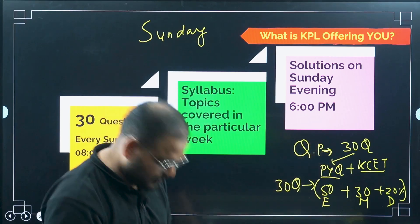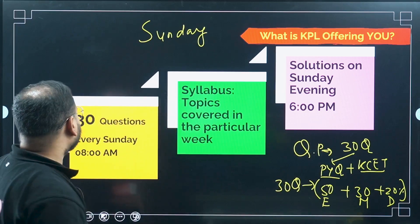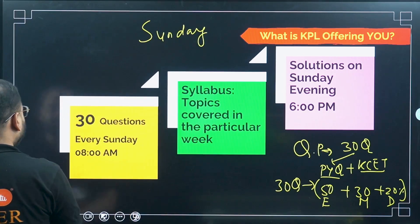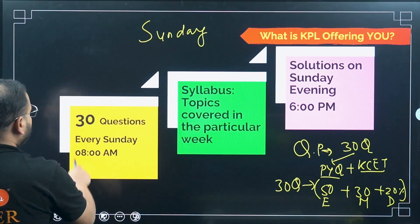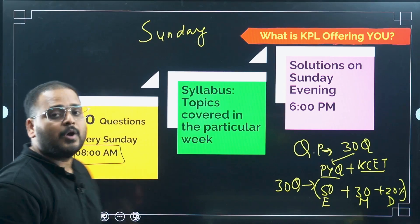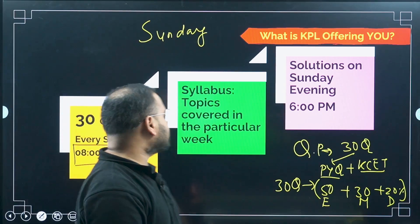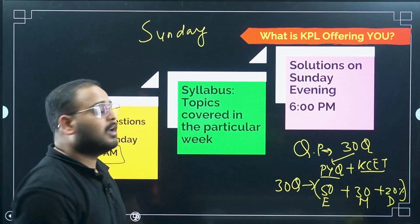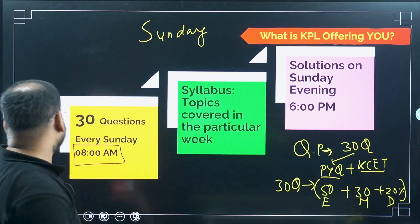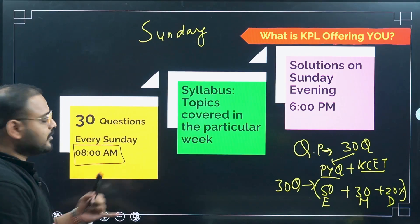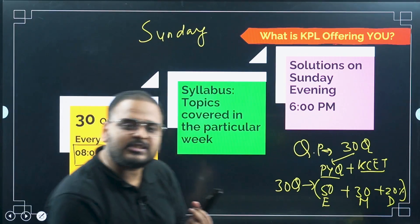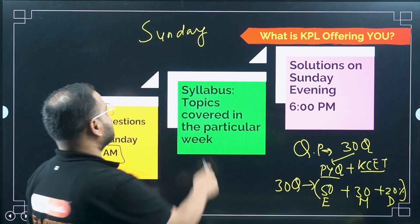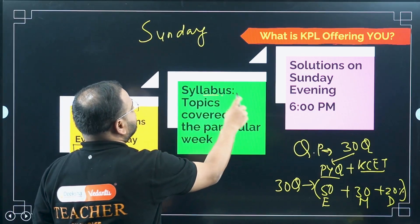Now, when will you get this question paper? You will get it in the morning of Sunday at 8AM. So the question paper will be available Sunday morning at 8AM. Now, what is the syllabus? The structure of the question paper is the first point, the timing is the second, and the third is the syllabus of the question paper.